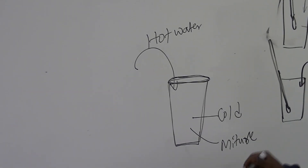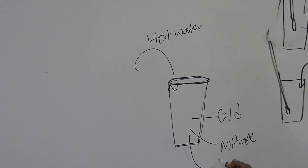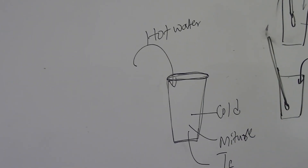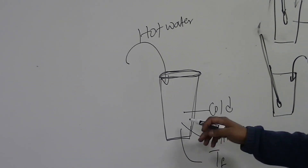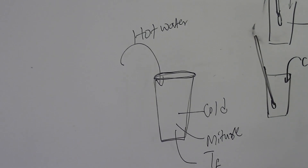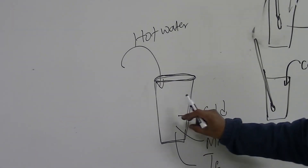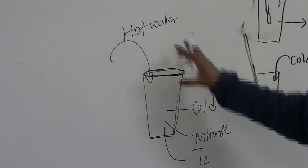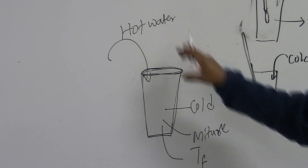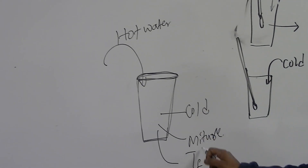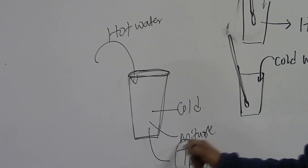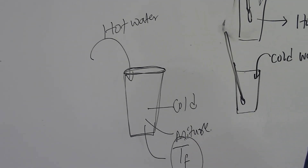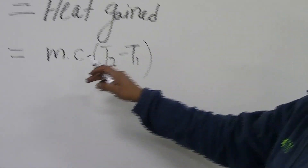Now you're going to measure the final temperature T-final of the mixture. The total mass is the mass of the hot water plus the mass of the cold water, and T-final is the final temperature of the mixture. We're going to use this equation to calculate T-final.